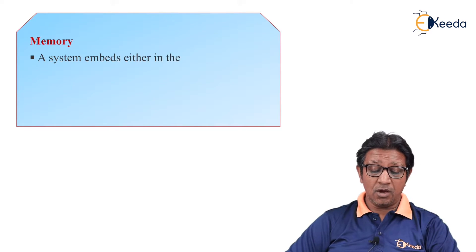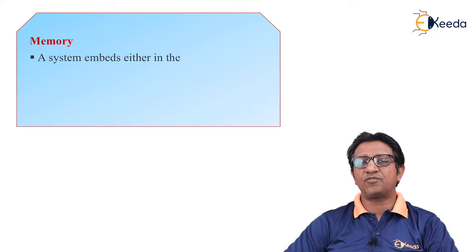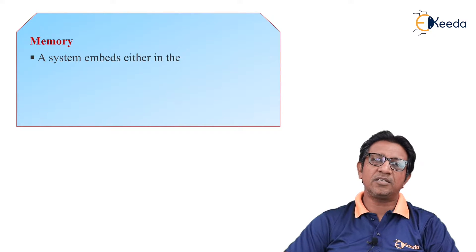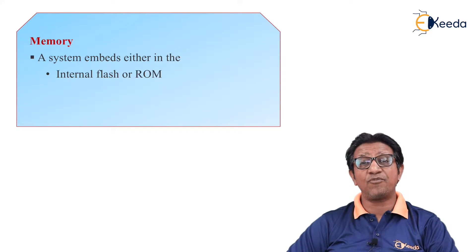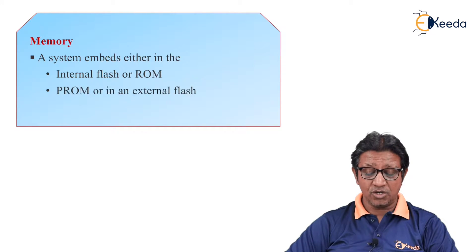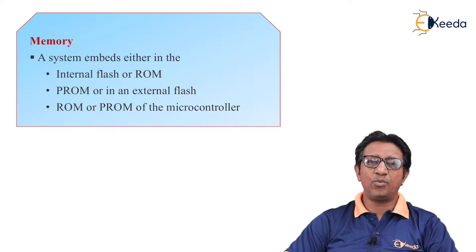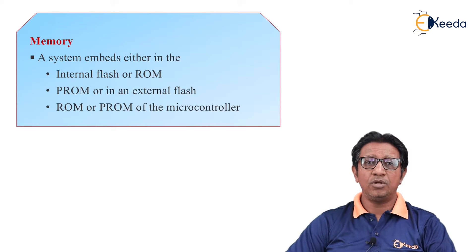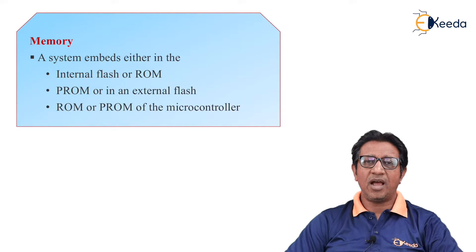First is memory. The embedded system is a fixed dedicated system. In an embedded system, software is stored in hardware, which is called firmware. This can be stored either in internal ROM, flash ROM, external flash, or ROM of the microcontroller. Different memories in the embedded system may be ROM, PROM, or flash memory. ROM stands for read-only memory, PROM stands for programmable read-only memory, and flash memory is reprogrammable memory.